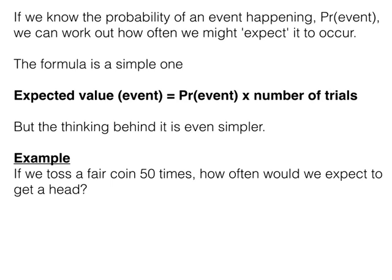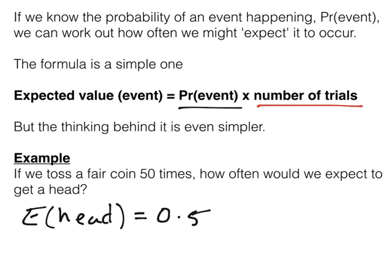Now in terms of this formula, here's how it would play out. The expected value of getting a head is the probability of getting a head, which we know is 0.5, times the number of trials, which in this case is 50. It's 0.5 times 50, so the answer is 25, just as we thought. And it's just that simple.